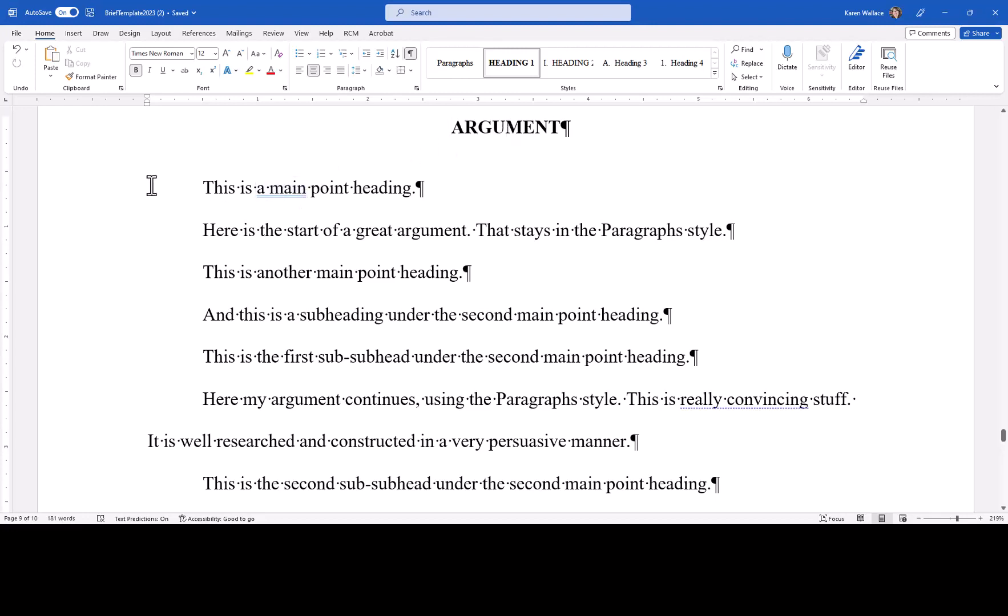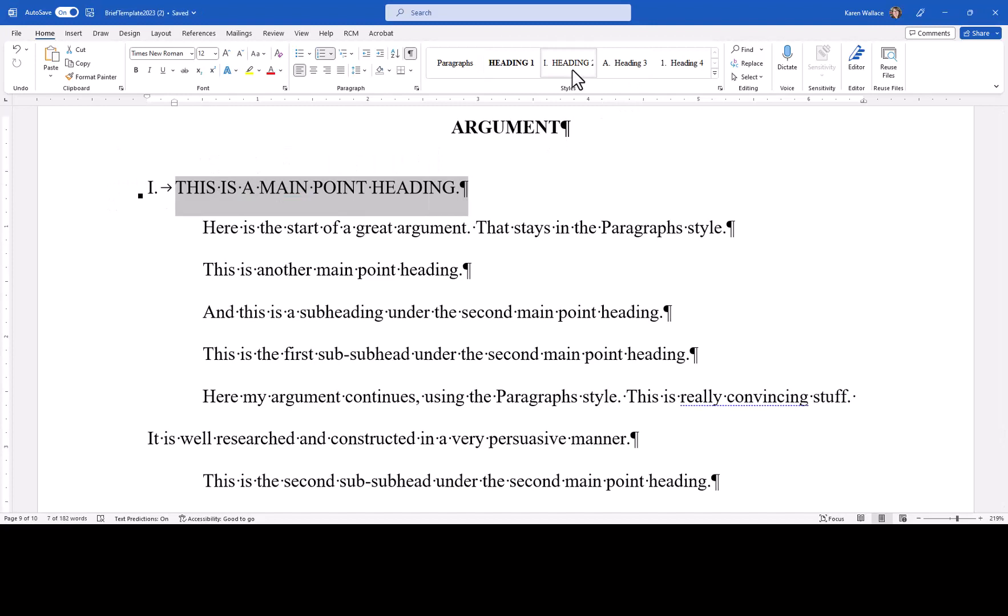So here's something that I want to be a main point heading. I select it and then I'm going to pick heading 2. Heading 2 puts the selected text in all caps and numbers it at the Roman numeral outline level.